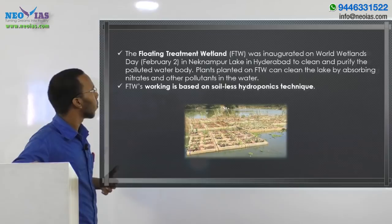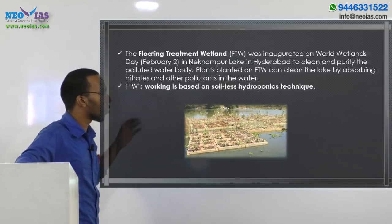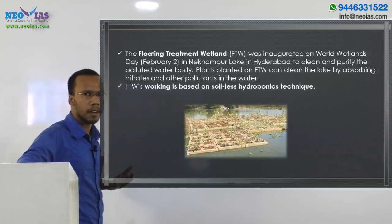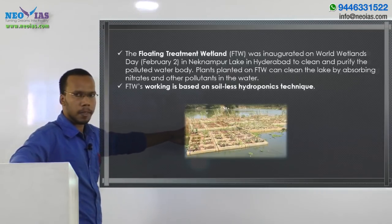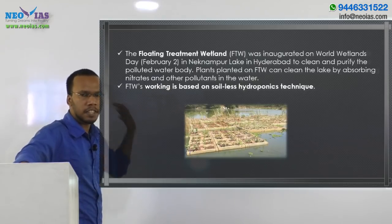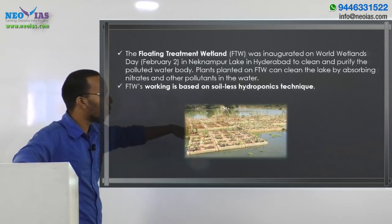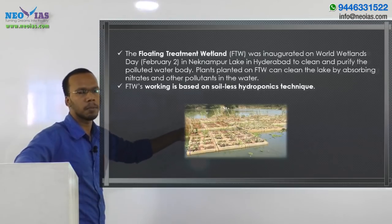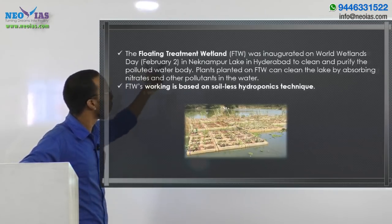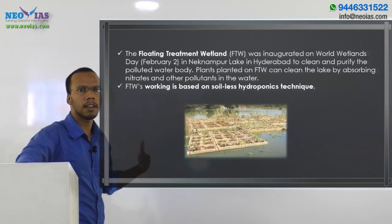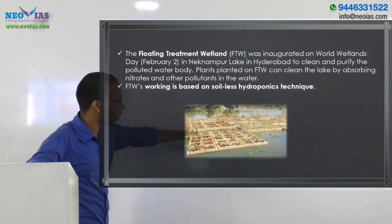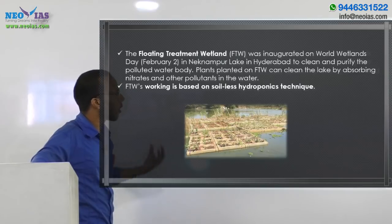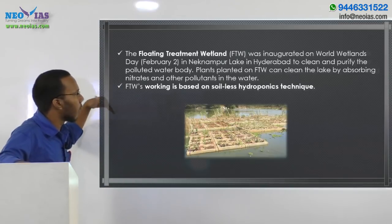The FTW, or floating treatment wetland, works based on the soilless hydroponics technique. There will be vegetation floating on the top of the water using certain structures — that is known as floating treatment wetland. Wetlands are cleaned or treated by using some vegetation, and the plants around this floating treatment wetland can clean the lake by absorbing nitrates and other pollutants in the water.